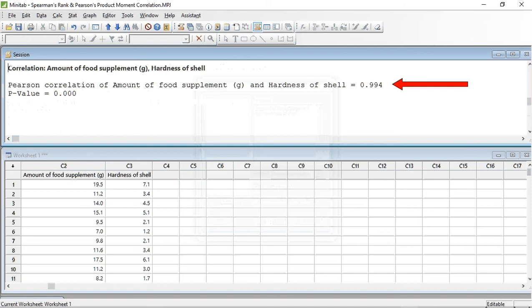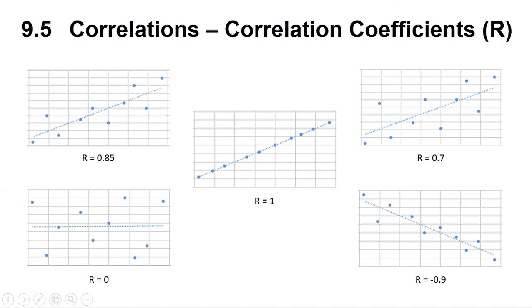We can see here that Pearson's Correlation of the amount of food supplement and hardness of shell is equal to 0.994. But what does this mean? The Correlation Coefficient is a number between 1 and minus 1 that tells us how closely our data is linearly correlated, with 1 or minus 1 meaning perfectly correlated, while 0 means the points are not correlated at all.